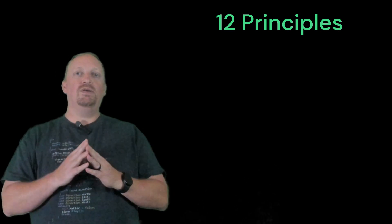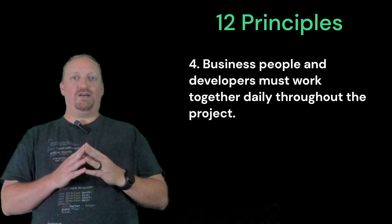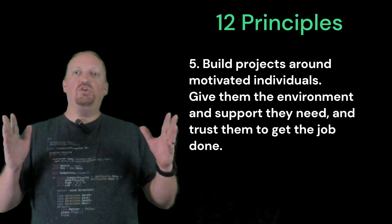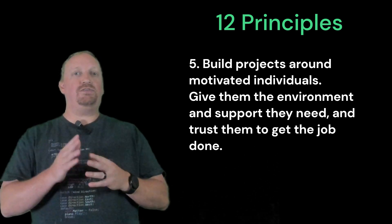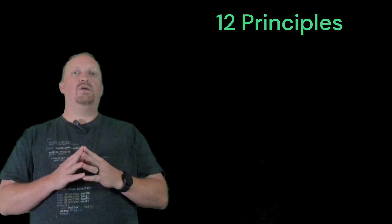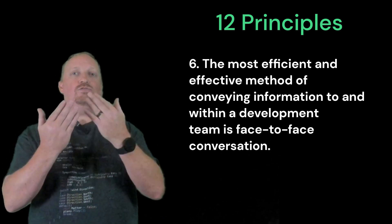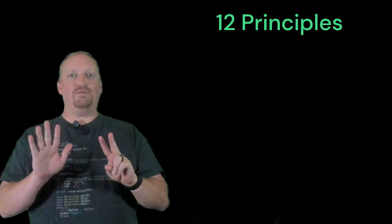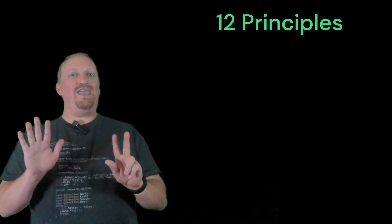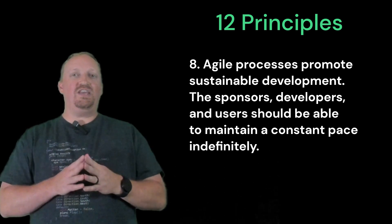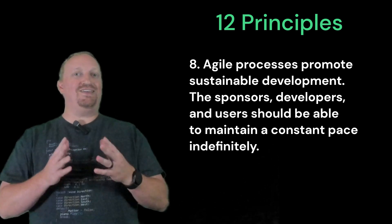Number four: business people and developers must work together daily throughout the project. Number five: build projects around motivated individuals — give them the environment and support they need and trust them to get the job done. Number six: the most efficient and effective method of conveying information to and within a development team is face-to-face conversation. Number seven: working software is the primary measure of progress. Number eight: agile processes promote sustainable development — the sponsors, developers, and users should be able to maintain a constant pace indefinitely.